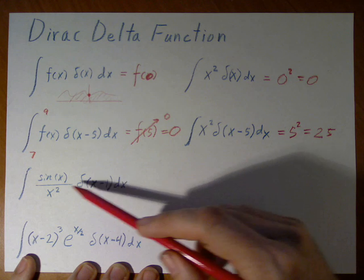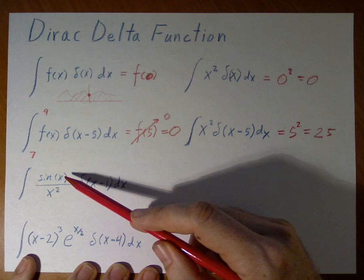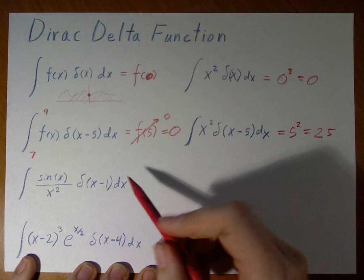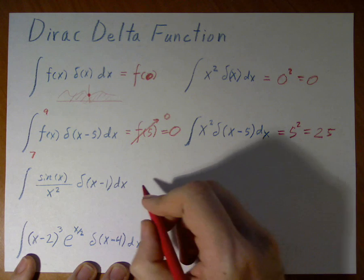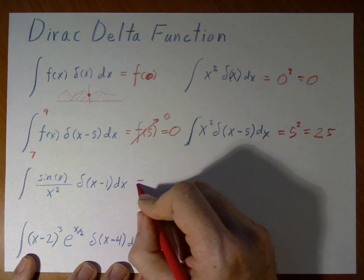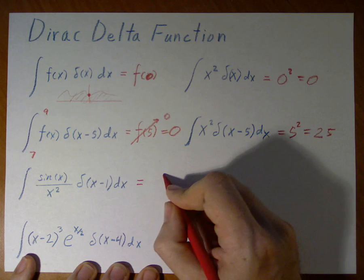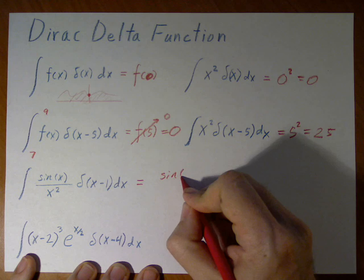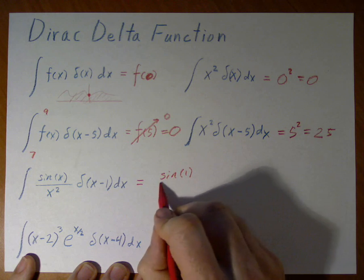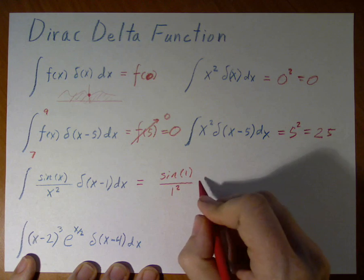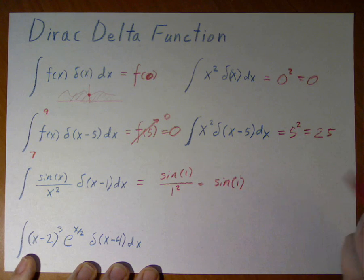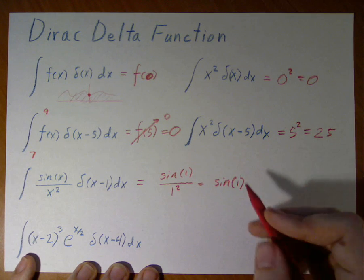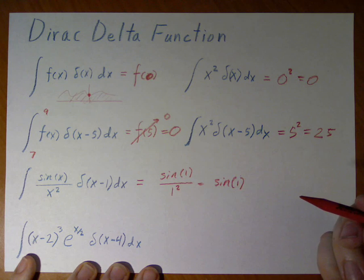If we apply this to a more complicated one, such as sine of x over x squared, with a delta function x minus 1, then we get sine of 1 over 1 squared, or simply just sine of 1. You can calculate this on any calculator without any trouble.